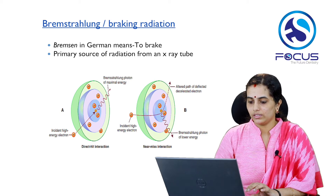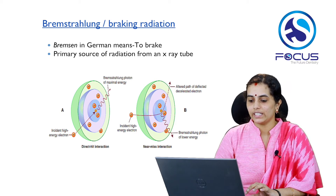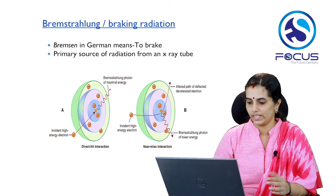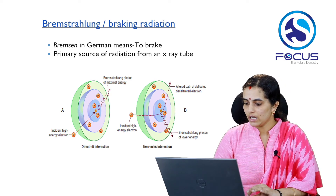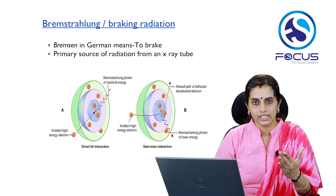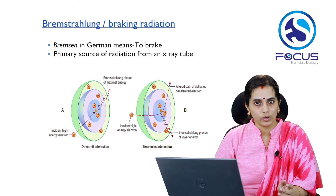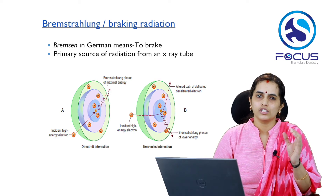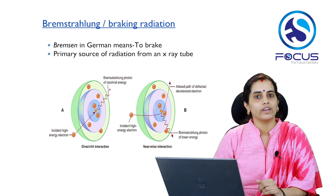In Bremsstrahlung production, a high-energy incident electron interacts with the nucleus of a tungsten atom. In a direct hit interaction, the electron stops immediately in its path and a Bremsstrahlung photon of maximum energy is released. In a near-miss interaction, the incident electron is deflected and moves toward the nucleus with an altered path, releasing a Bremsstrahlung photon of smaller energy.